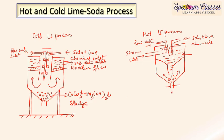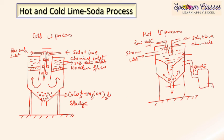In the hot process, soft water is collected from the soft water outlet, while sludge particles exit through a sludge outlet. Since fine suspended particles remain, coagulants are added, causing them to agglomerate. The water then passes through an external filter containing three layers: fine sand, coarse sand, and gravels, to produce the final soft water.